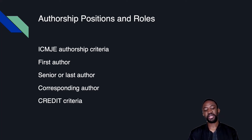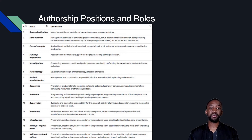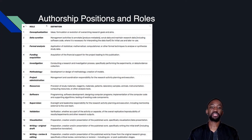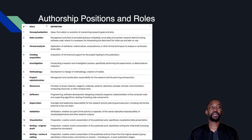Elsevier has the CRediT criteria, which I find very helpful. You can search 'Elsevier CRediT criteria' to find the different roles one can play in research. These include straightforward contributions like data collection and curation, data analysis, generating visuals, financing, supervising, and project administration, as well as less obvious roles. It is important to get familiar with these — both for yourself and for your team.